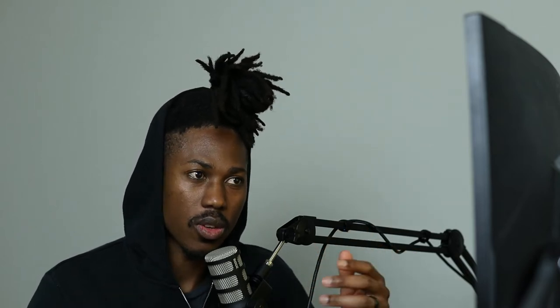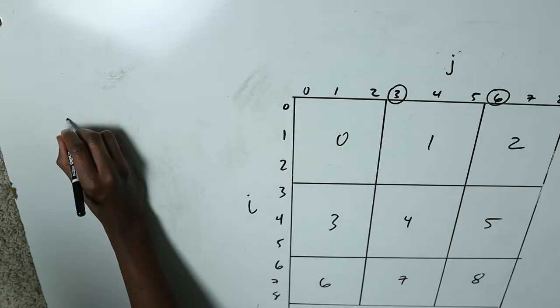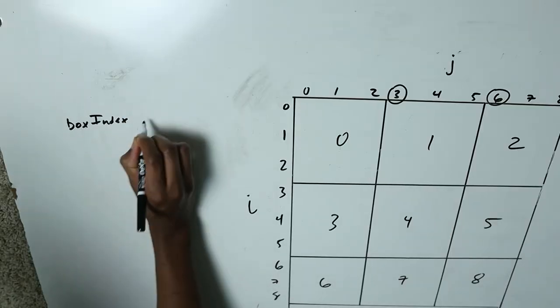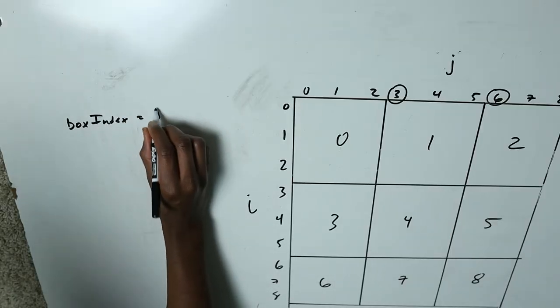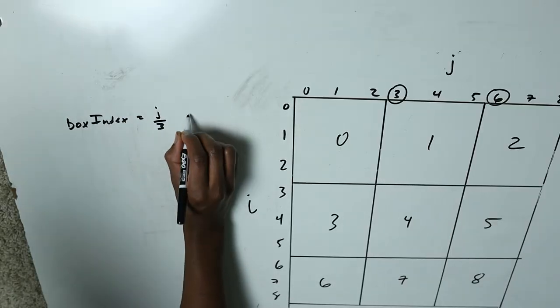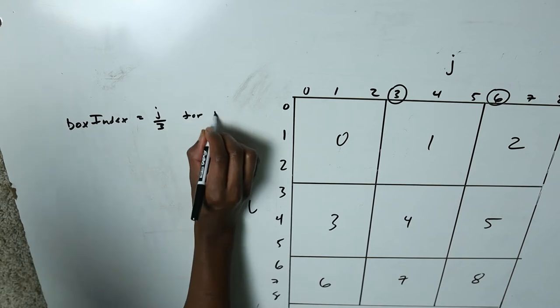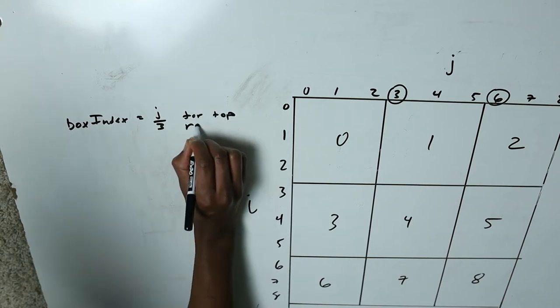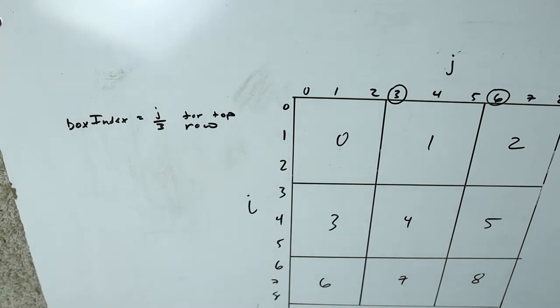For a rough draft: int box_index = j / 3. This satisfies the top row — essentially j divided by three will handle the top row indices.